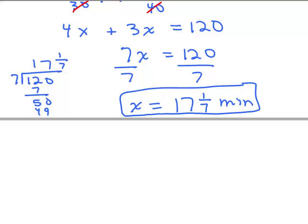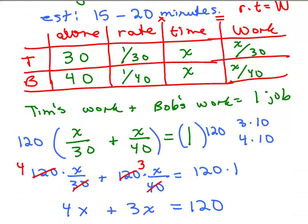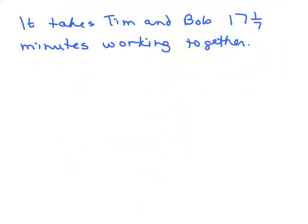So it looks like it's going to be 17 and 1/7th minutes. Well, let's see. How does that compare to our estimate? Our estimate, remember, was that it would take 15 to 20 minutes. So this seems like a reasonable answer. The last thing you want to do is write your answer. I asked how long it takes Tim and Bob working together. So you would say it takes Tim and Bob 17 and 1/7th minutes working together.